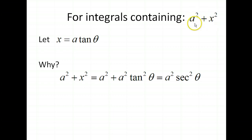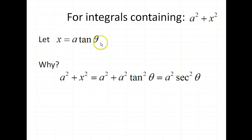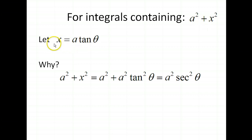When we see an expression like this in our integral and we can't do any of the other options like a u-substitution or integration by parts, we could consider doing the following substitution. When we have this form appearing — remember addition is commutative, so you might also see this written as x squared plus a squared — that would be the same thing.